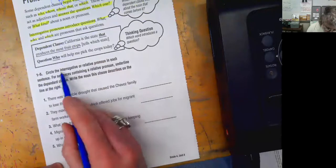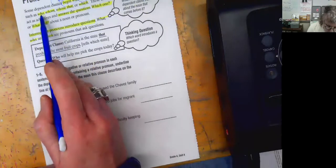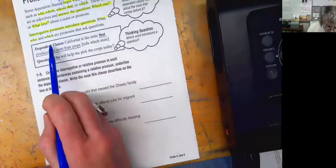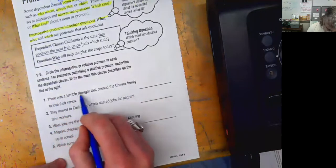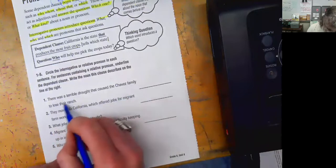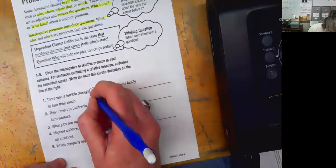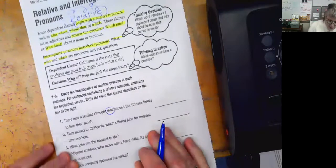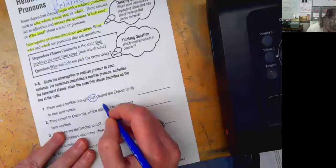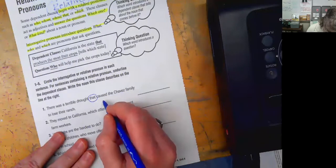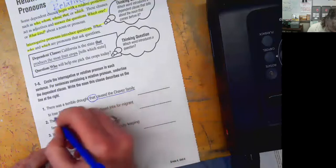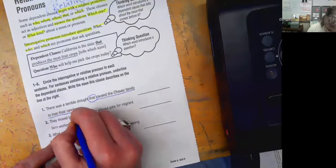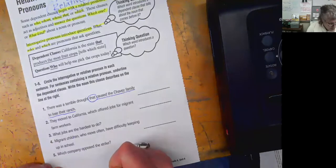Are you ready? We're circling the relative pronouns. So if we see a who, whom, whose, that, which, we're going to circle that. There was a terrible drought that caused the Chavez family to lose their ranch. So I'm seeing that, right? Right here, that is number four on the list. And now what I'm going to do is I'm going to underline the dependent clause. So we have caused the Chavez family to lose their ranch. Okay, so far so good.